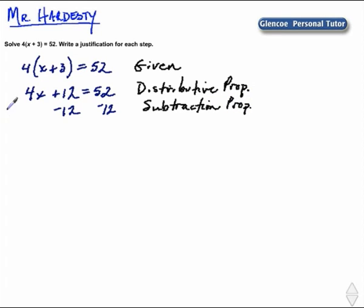Simplify. We're left with 4x equals 40 when we subtract. That is, we've substituted 40 in for 52 minus 12. So that's substitution.